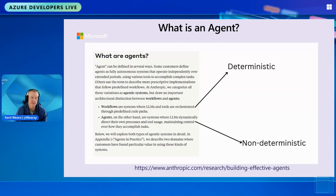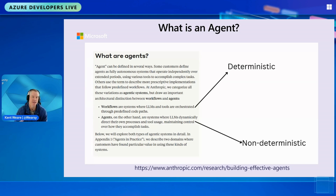Workflows, on the other hand, are more deterministic — we code or configure specific swim lanes and the process runs through them consistently. But there's an opportunity to bring these two worlds together: plugging a workflow in as a tool to address a deterministic need, while also leveraging large language models for orchestration and automation. As was said earlier, if you're doing things more than once, you should look at automating.